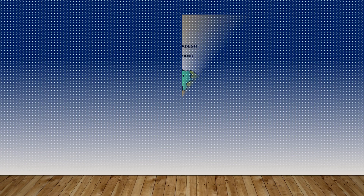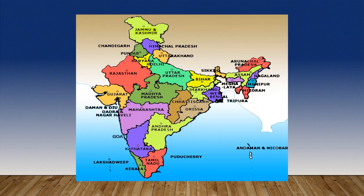Now, see children, India's map. There are different states here. This you have to see in your Atlas book. See all the states we have. Now, we are going to discuss a few states and their characteristics — what they do or what they are famous for.